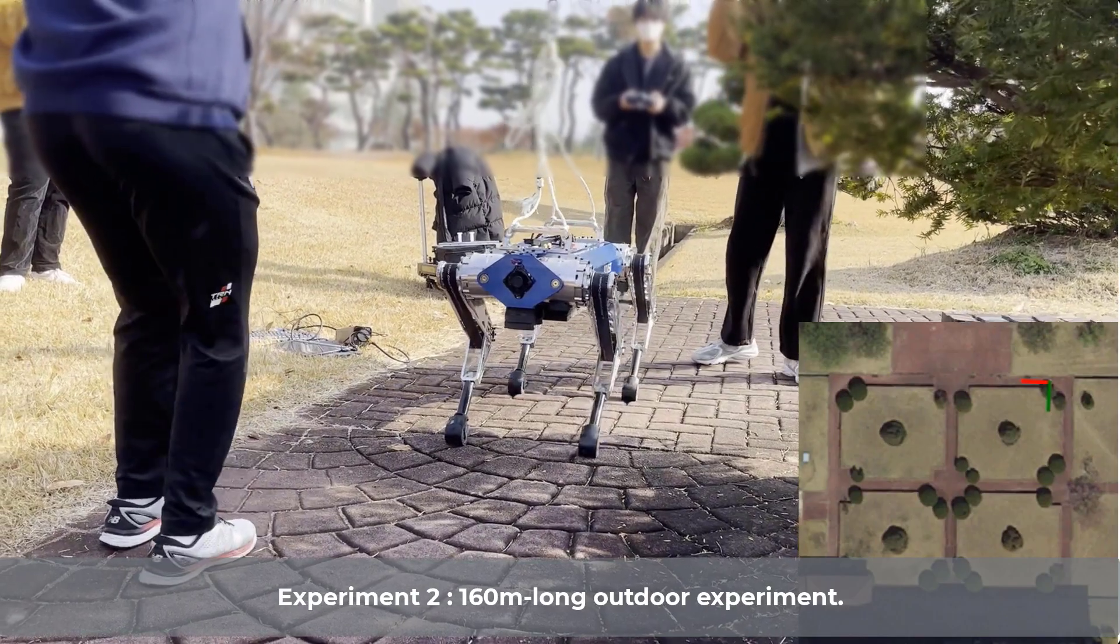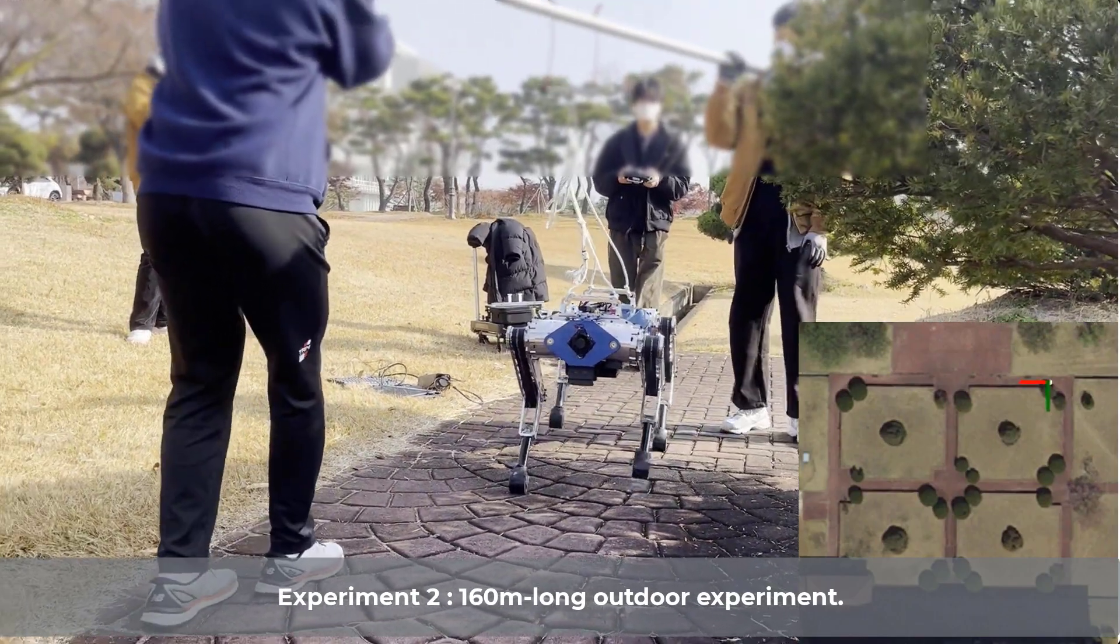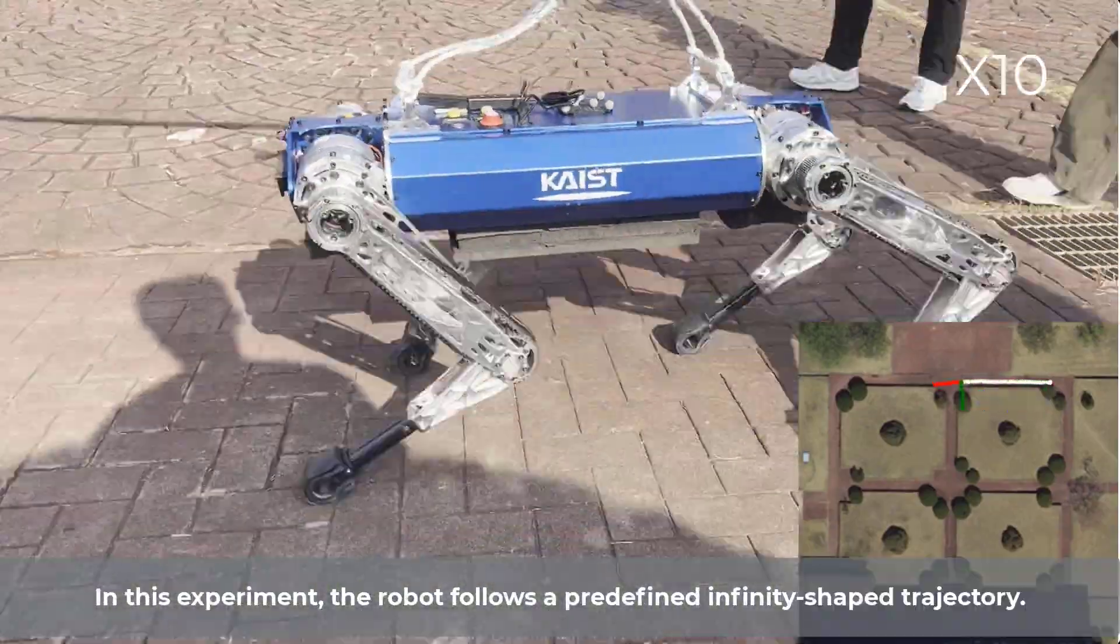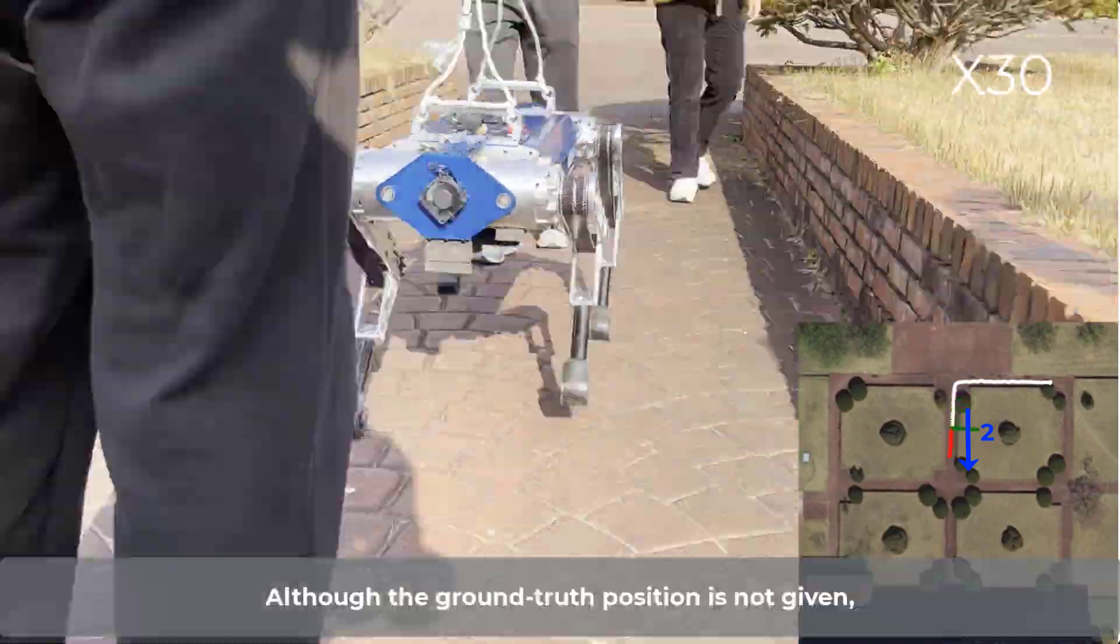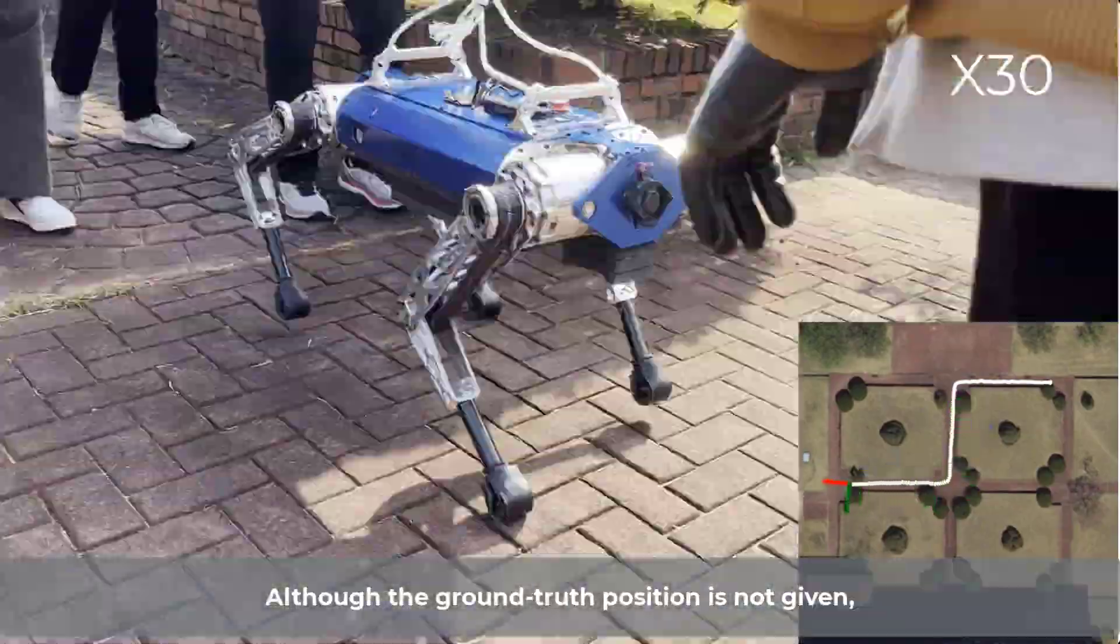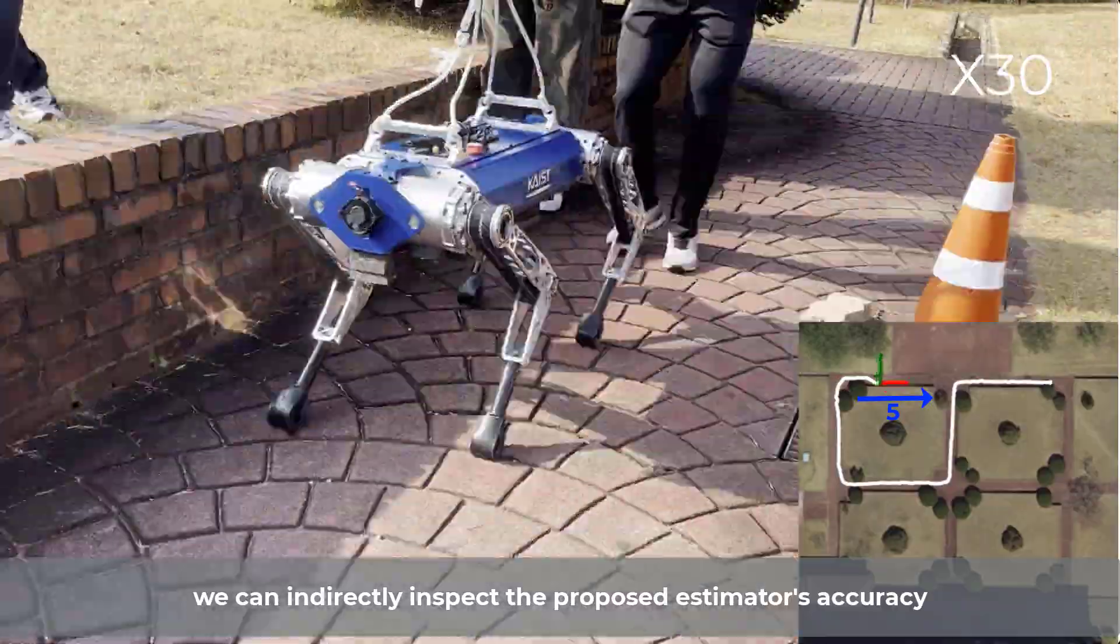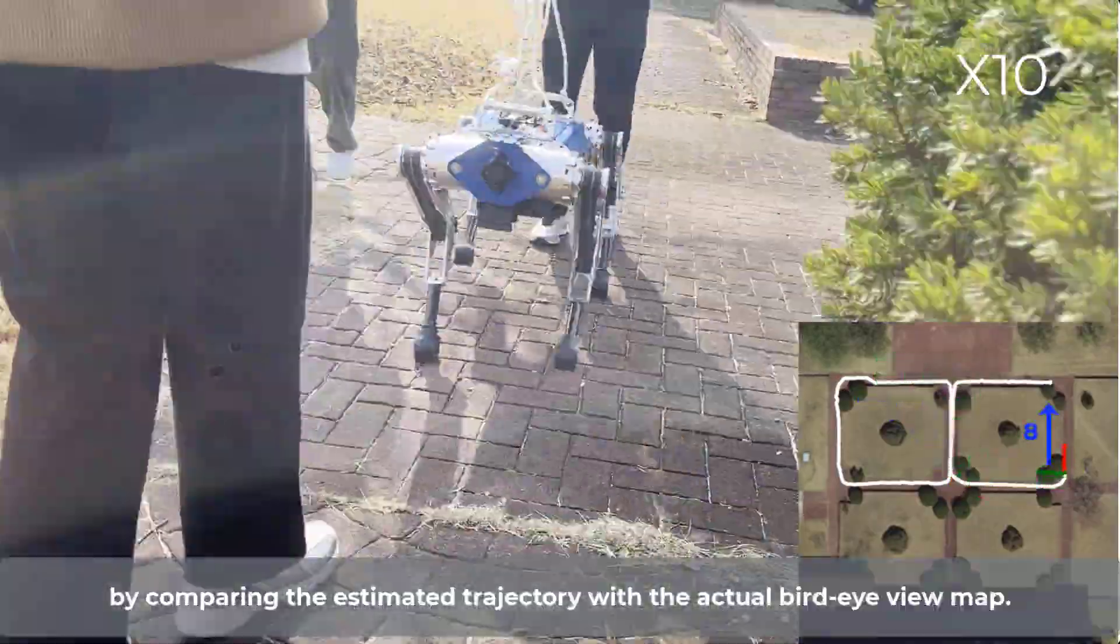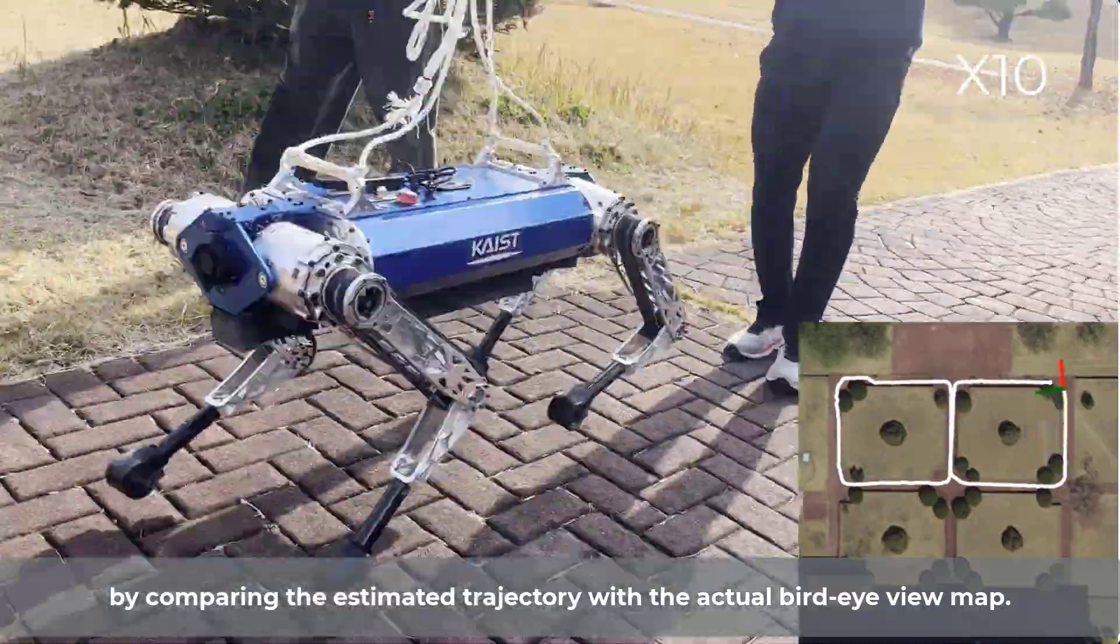Experiment 2. 160 meters long outdoor experiment. In this experiment, the robot follows a predefined infinity-shaped trajectory. Although the ground truth position is not given, we can indirectly inspect the proposed estimator's accuracy by comparing the estimated trajectory with the actual bird-eye viewmap.